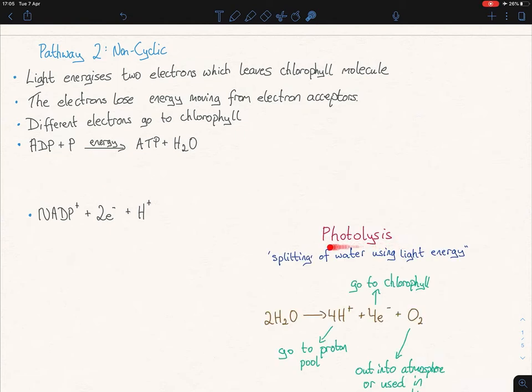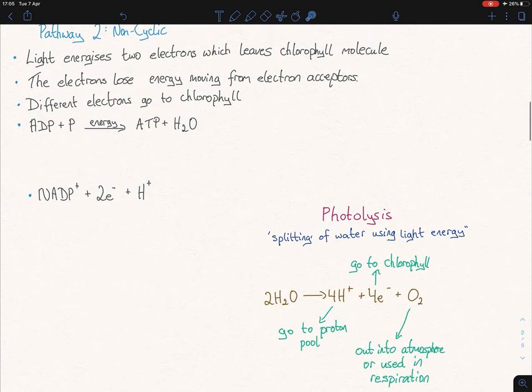So there is another part to it and we call it photolysis. Lysis means splitting. Photo meaning light. So it's the splitting of water using light energy. So what actually happens there is, and you don't need to know this definition or this formula off by heart or anything like that. If you just knew the water breaks down to produce your protons, electrons, and oxygen.